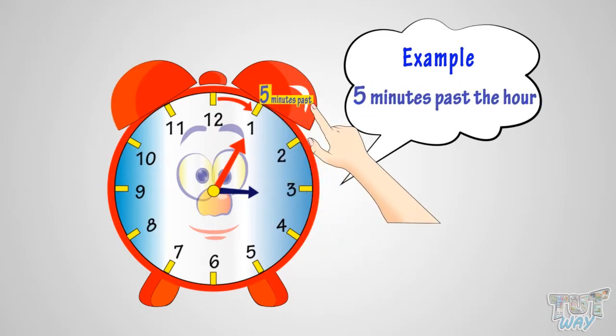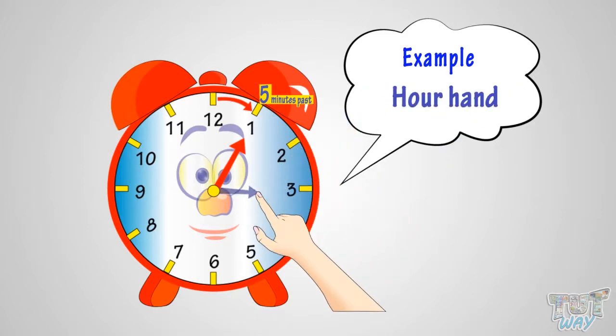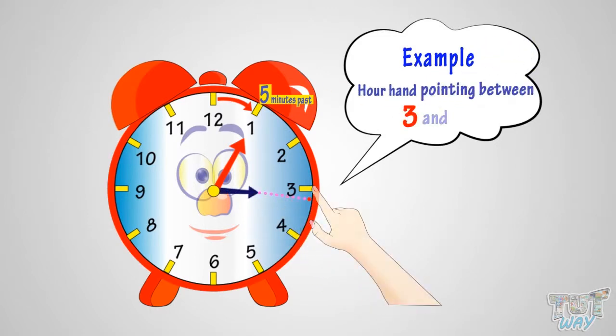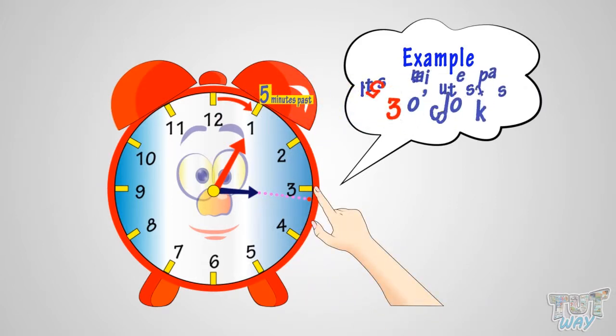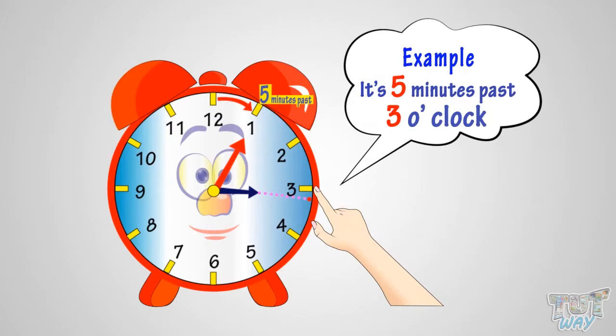But five minutes past which hour? Let's try to figure out. First, see the hour hand. It is pointing between 3 and 4, but it is closer to 3, so it's 5 minutes past 3.